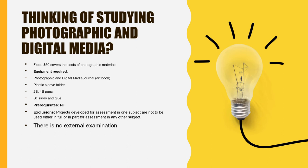Other things you will need for this subject are a photographic and digital media journal, also known as an art book, a plastic sleeve folder where you'll be able to keep your test strips, negatives and photographs in, some writing equipment — 2B and 4B pencils, scissors and glue.